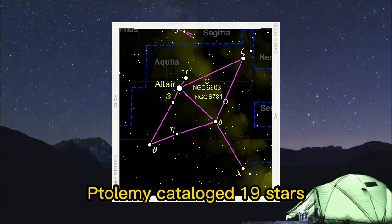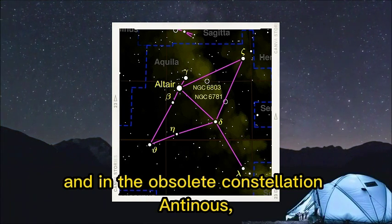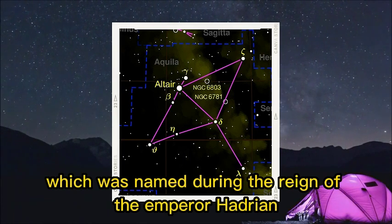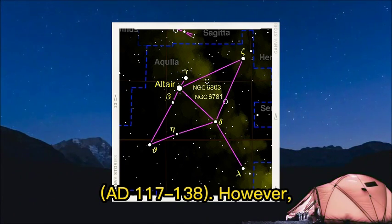Ptolemy catalogued 19 stars jointly in this constellation and in the obsolete constellation Antinus, which was named during the reign of the Emperor Hadrian, AD 117-138.